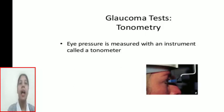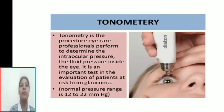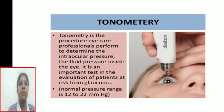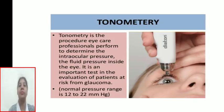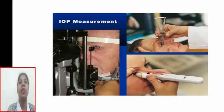Tonometry. Eye pressure is measured with an instrument called a tonometer. Tonometry is a procedure performed by eye care professionals to determine intraocular pressure — the fluid pressure inside the eye. It is an important test in the evaluation of patients at risk for glaucoma. Normal pressure range is 12 to 22 mmHg. There are different types of tonometers.